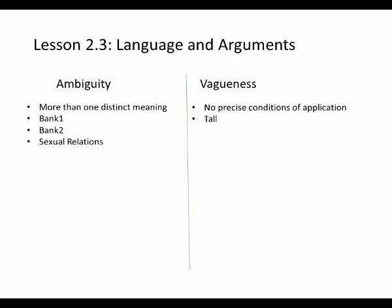For example, the word 'rich' can mean more than one thing — it can mean food that's very sweet, or it can mean a person has a lot of money. And both of those meanings are also vague. Exactly how much money, or exactly how sweet, is not something that's precisely defined.